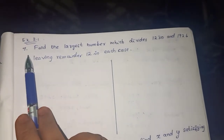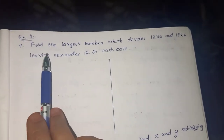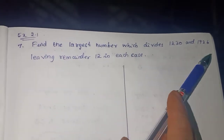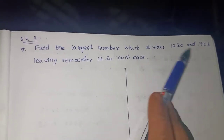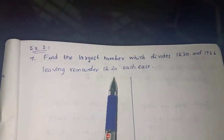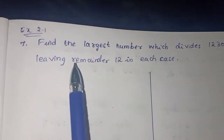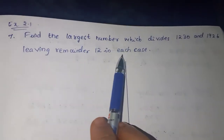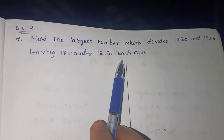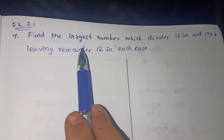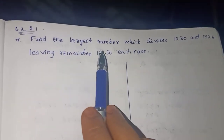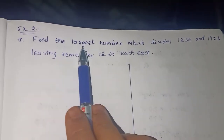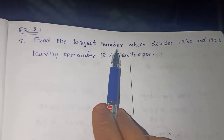Exercise 2.17: find the largest number which divides 1230 and 1926 leaving remainder 12 in each case. You may have come across this type of question in a smaller class. To find the largest number, we are going to apply Euclid's Division Algorithm.